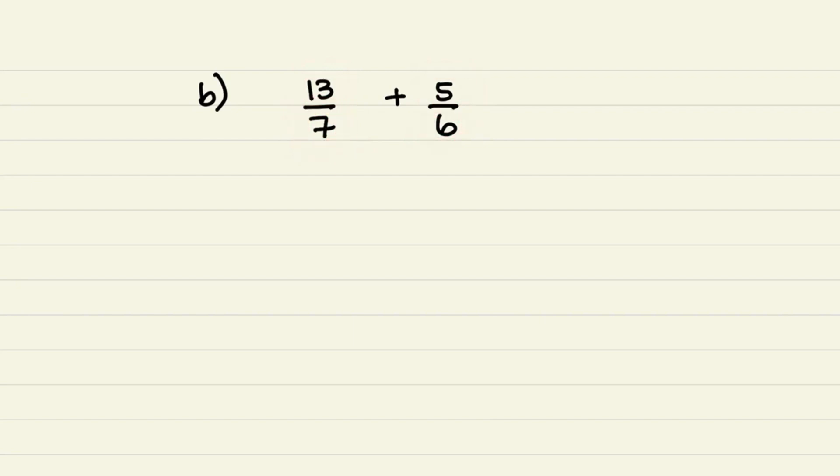And in order for us to find the LCD or the lowest common denominator, we can simply multiply 7 with 6. And that is equal to 42.